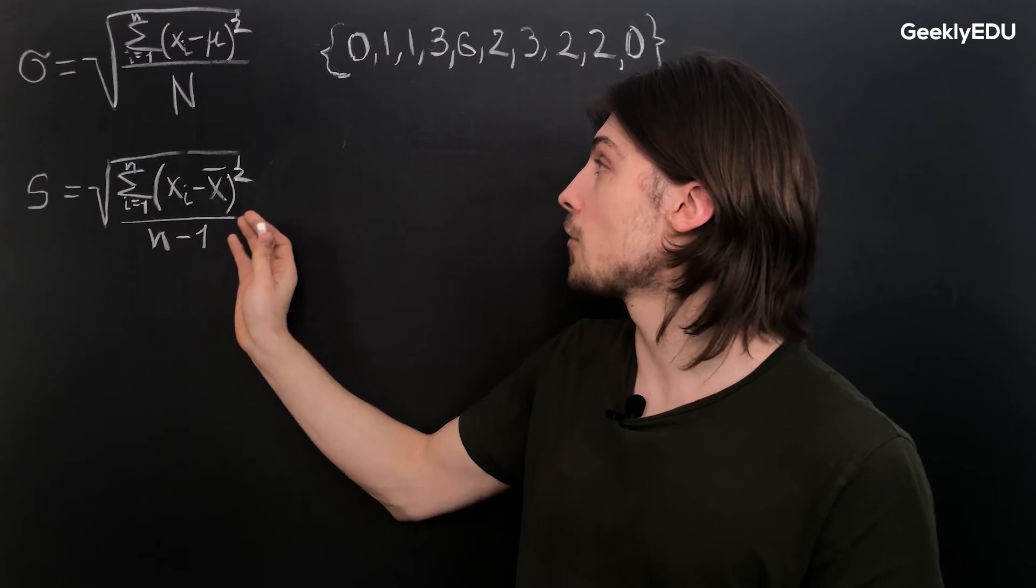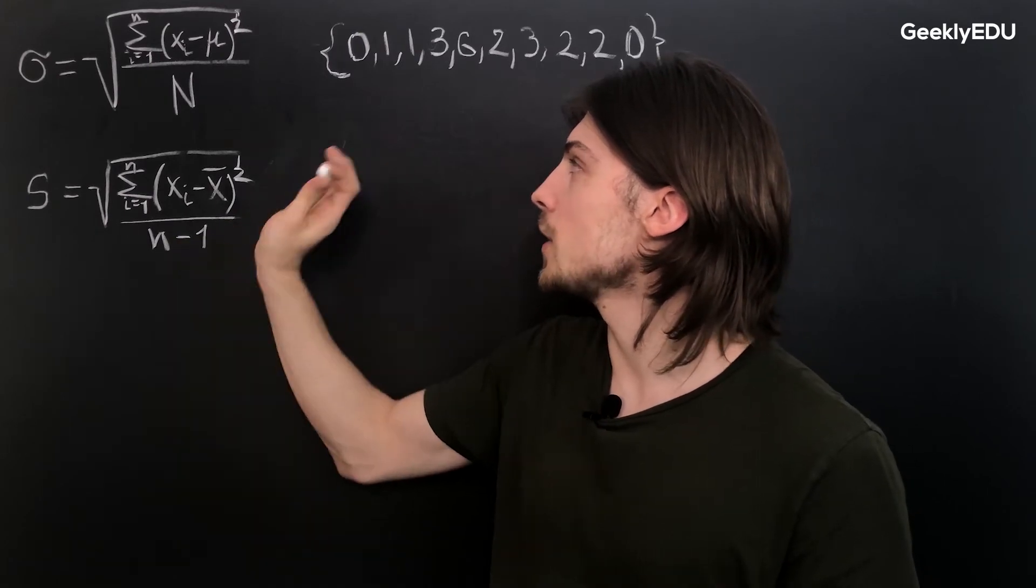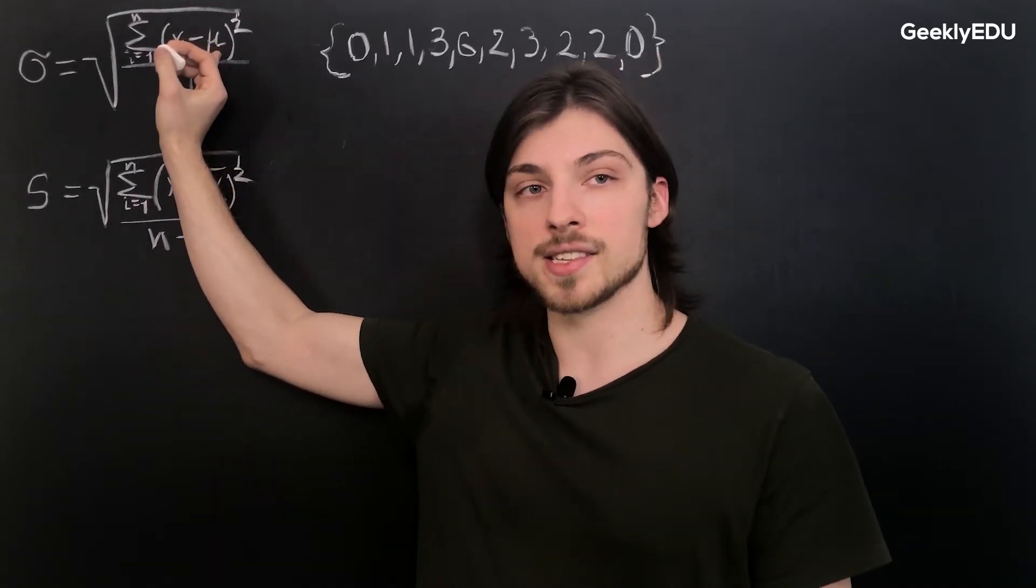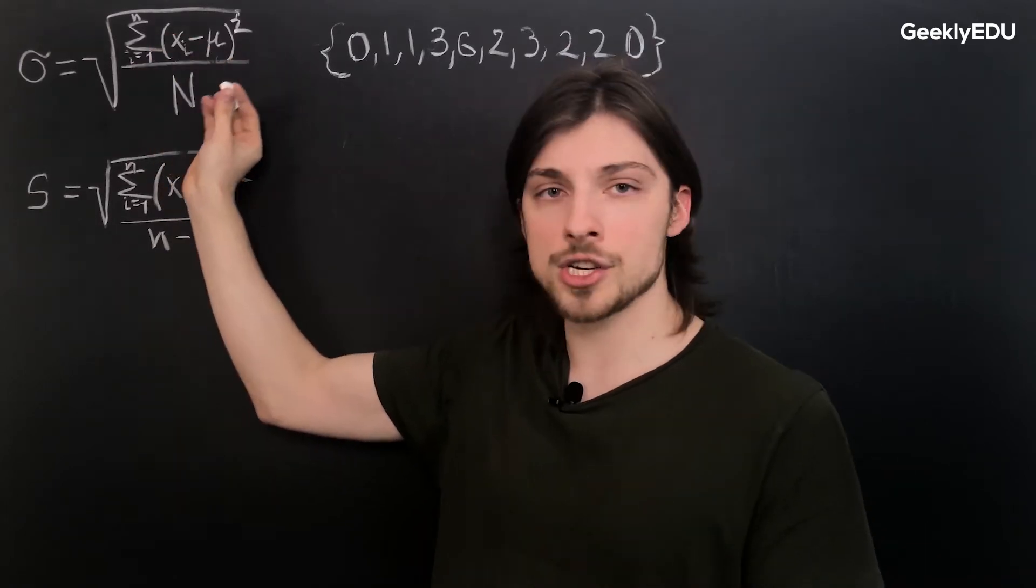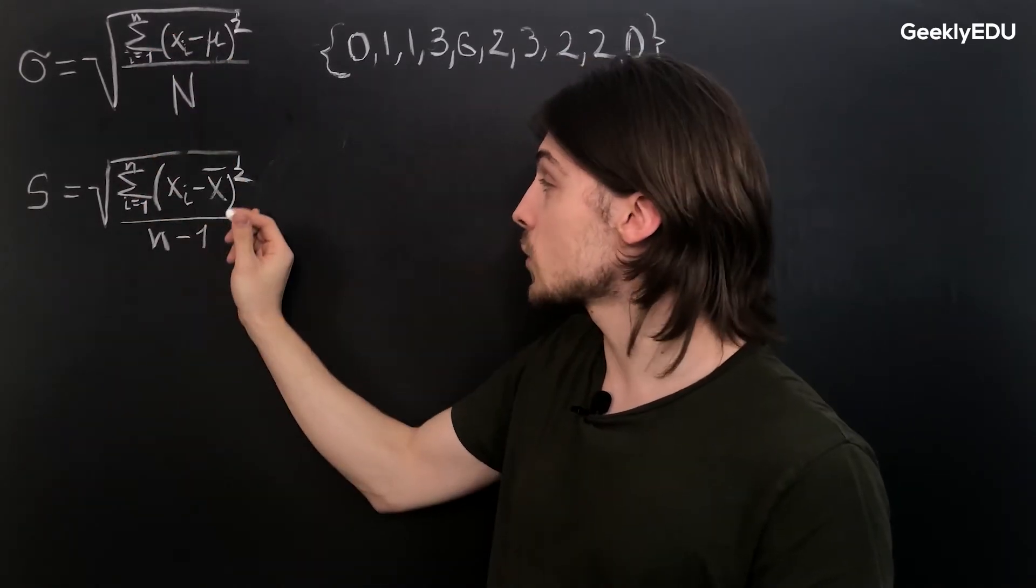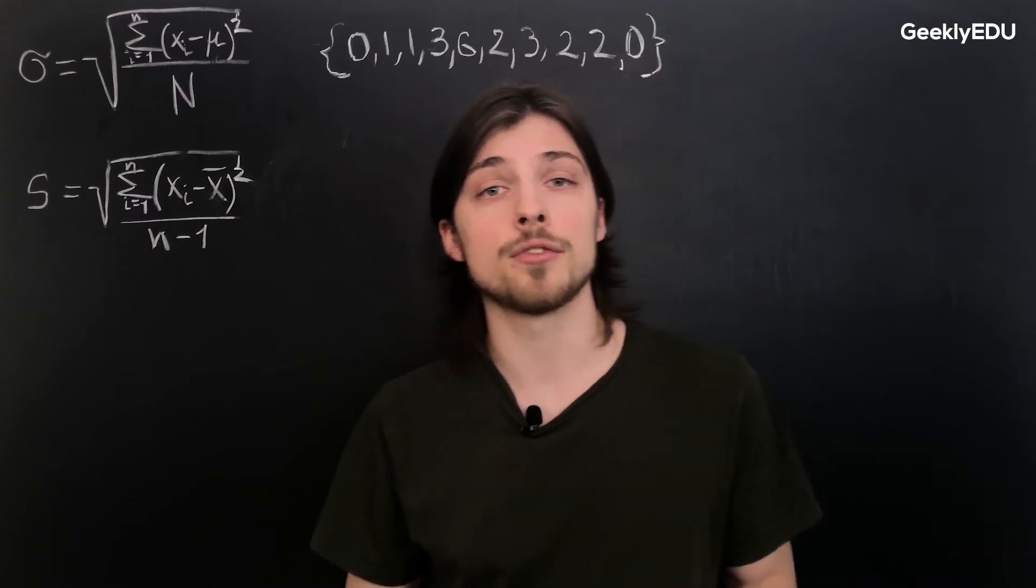And now that we have clarified all of those things, I also need to point out that this is a symbol that means mean for the population, so population mean, and this x with a hat is a mean for the sample, so a sample mean.